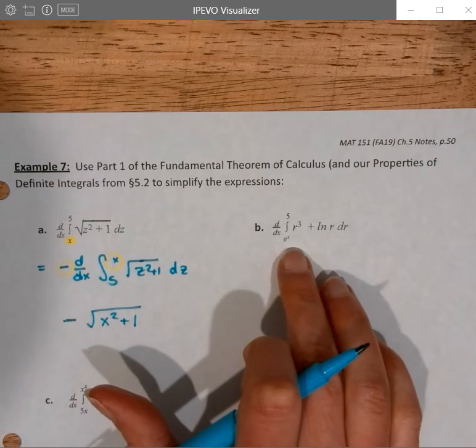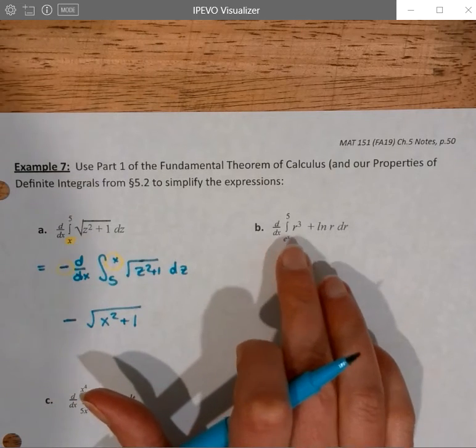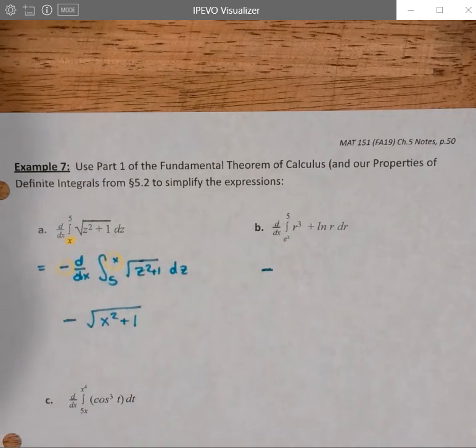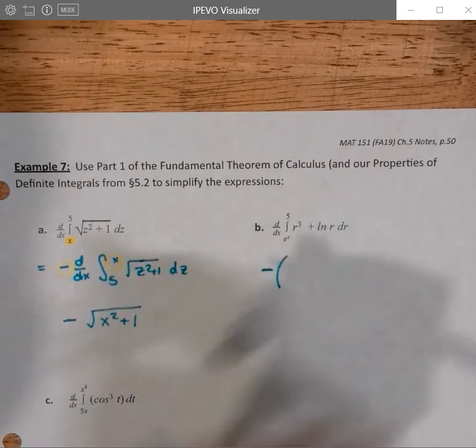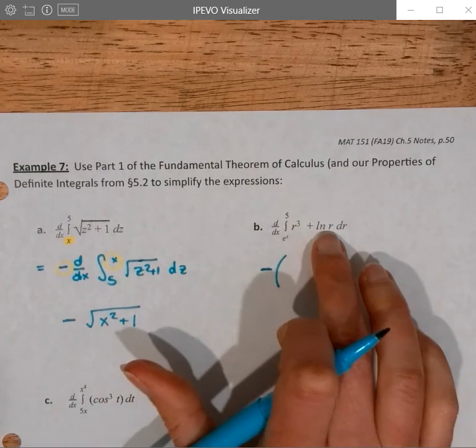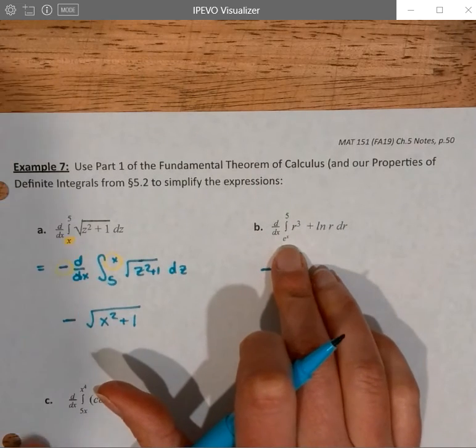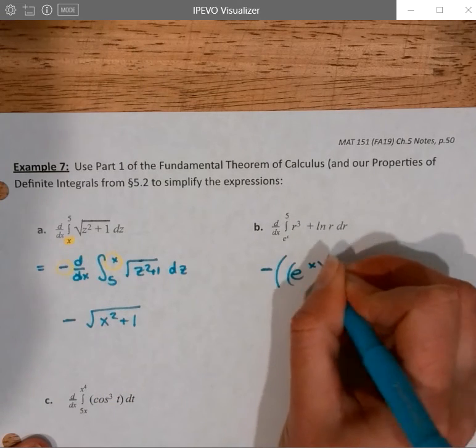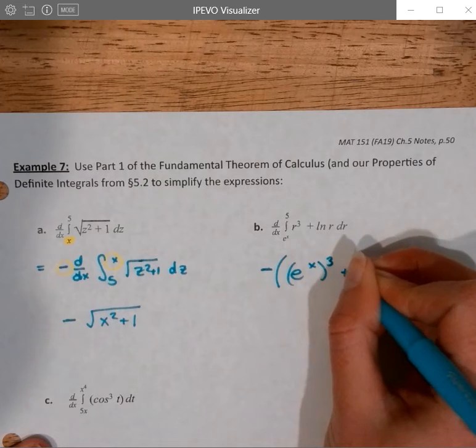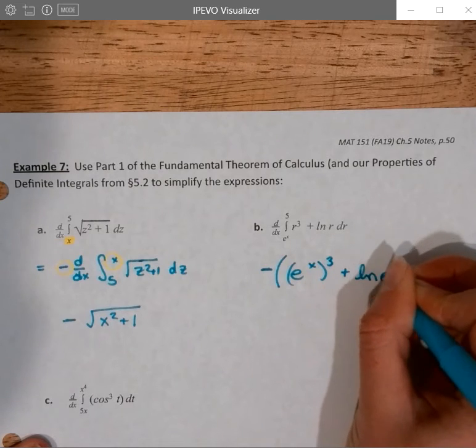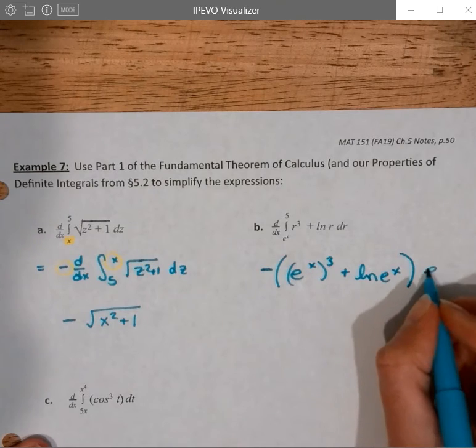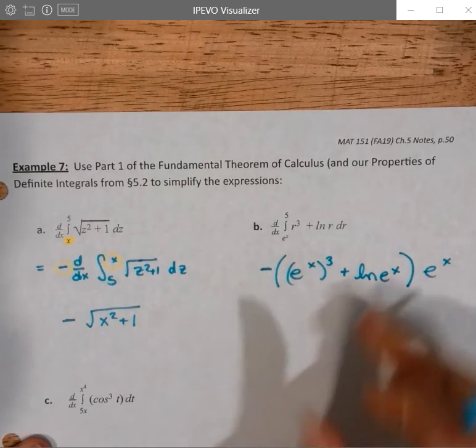Okay, so then this one is going to be very similar to that idea. There's going to be a negative because the bounds are in opposite direction. So I'll just go ahead and put my negative out there, parentheses open. Now we're going to pop in e to the x, and because e to the x is not just x, we're going to chain rule it as well. So negative e to the x gets cubed plus natural log of e to the x. That whole thing can get chain ruled by e to the x because they both have e to the x as their derivative.